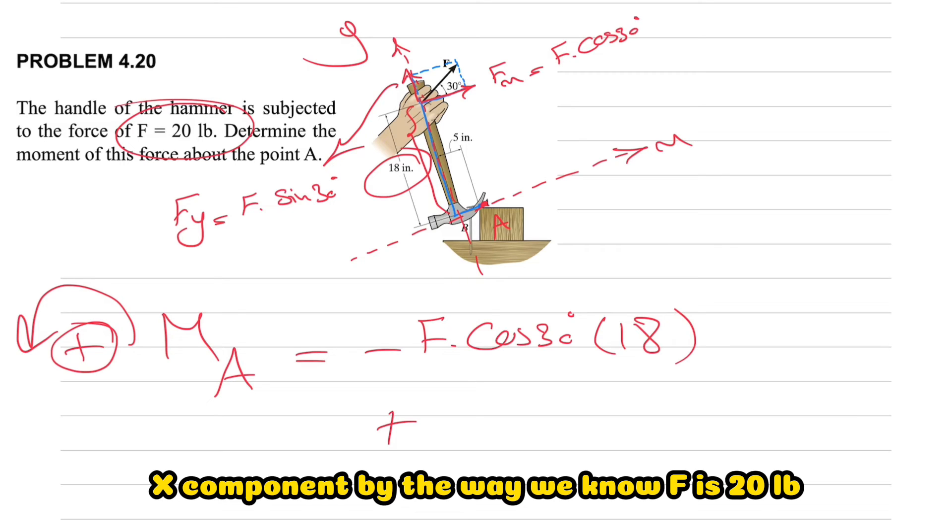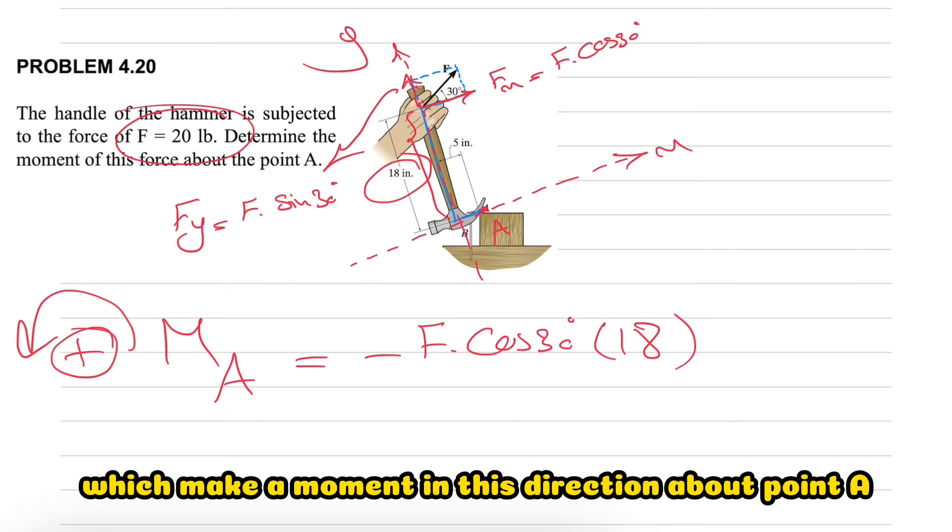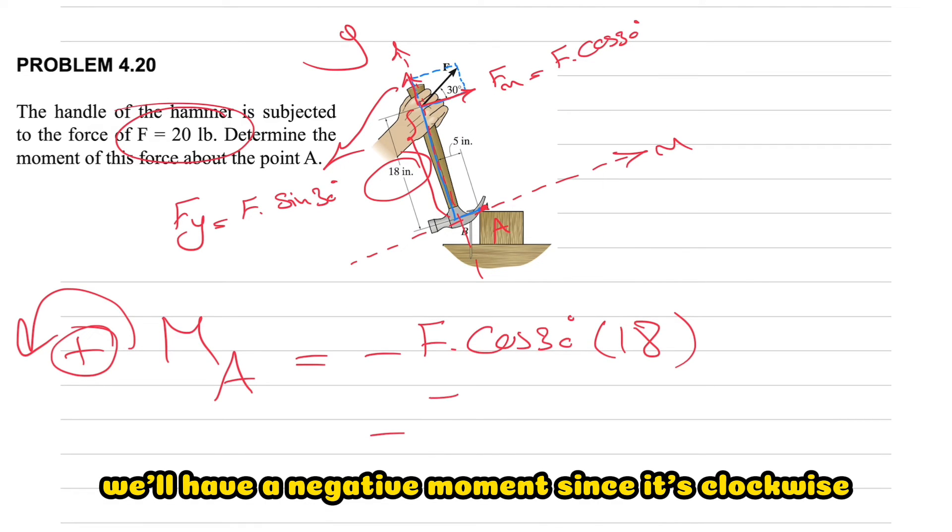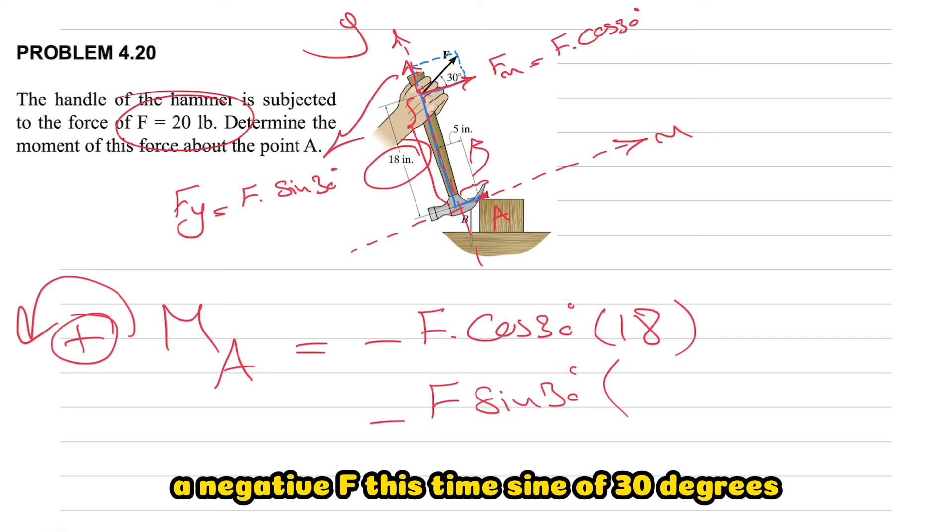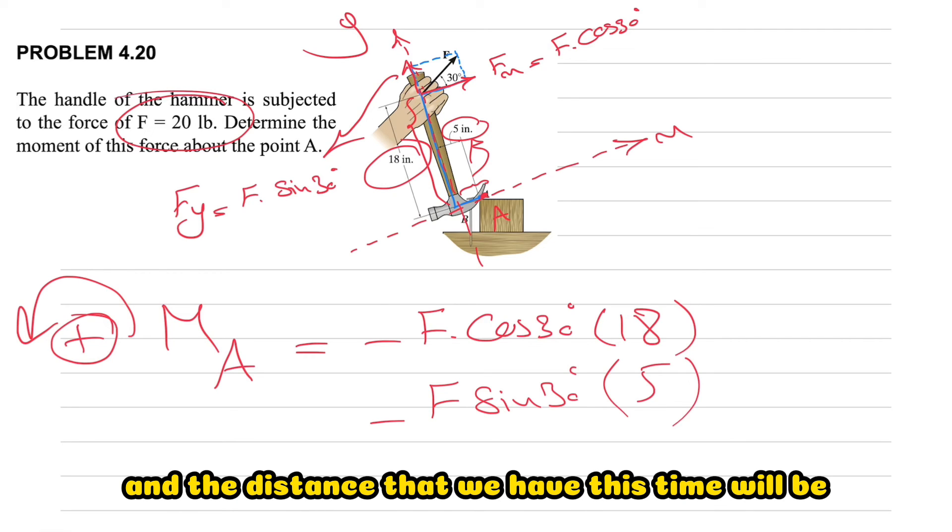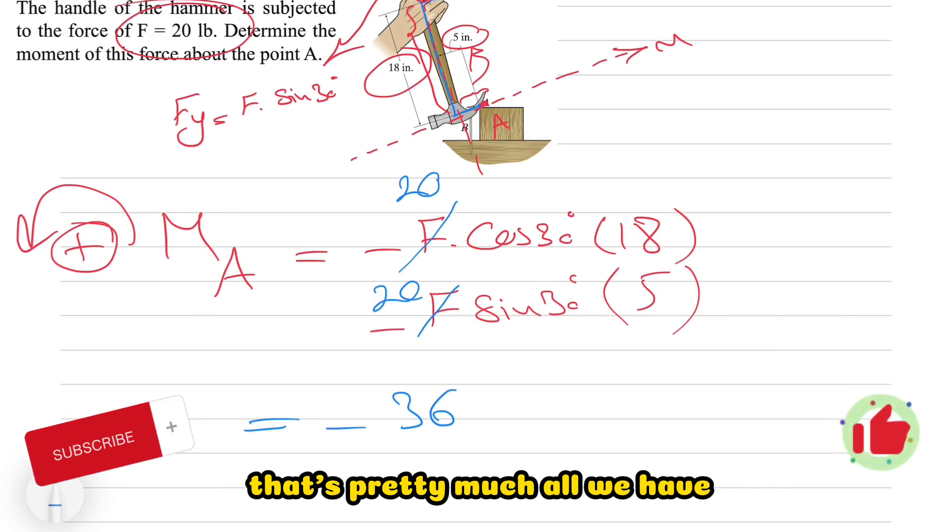Let's see what we have for Y component. Looking at Y we'll see this is our Y which makes a moment in this direction about point A that will have a negative moment since it's clockwise. So we'll have a negative F, this time sine of 30 degrees, and the distance that we have this time will be this distance in here and that would be 5 inches. That's pretty much all we have.